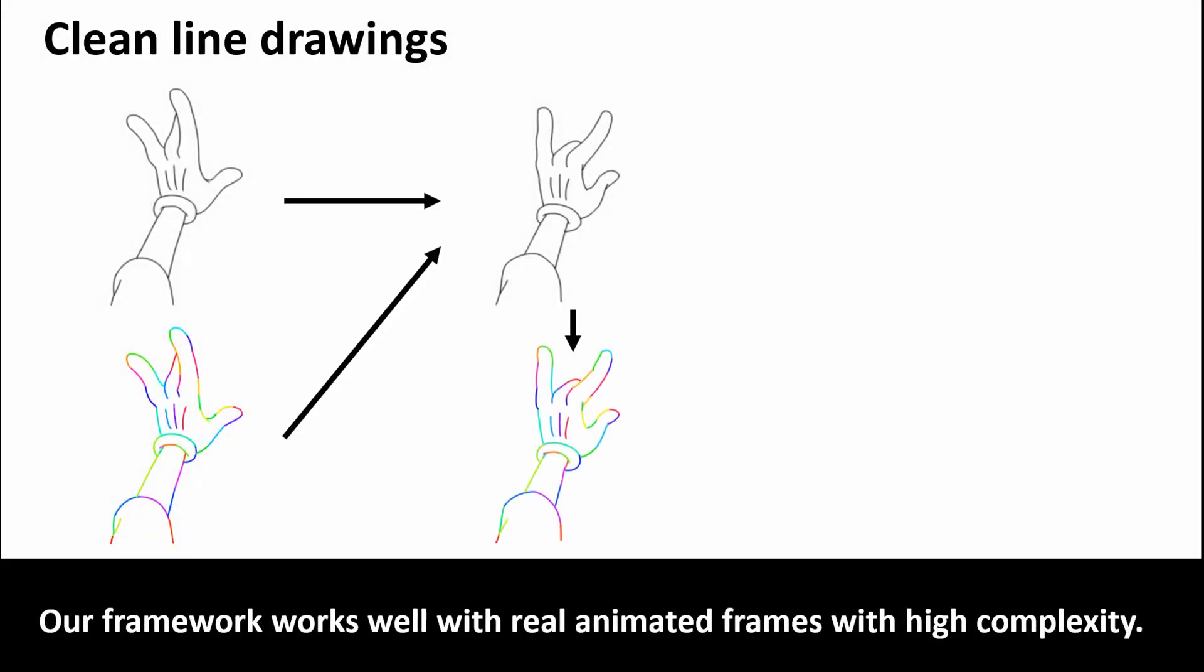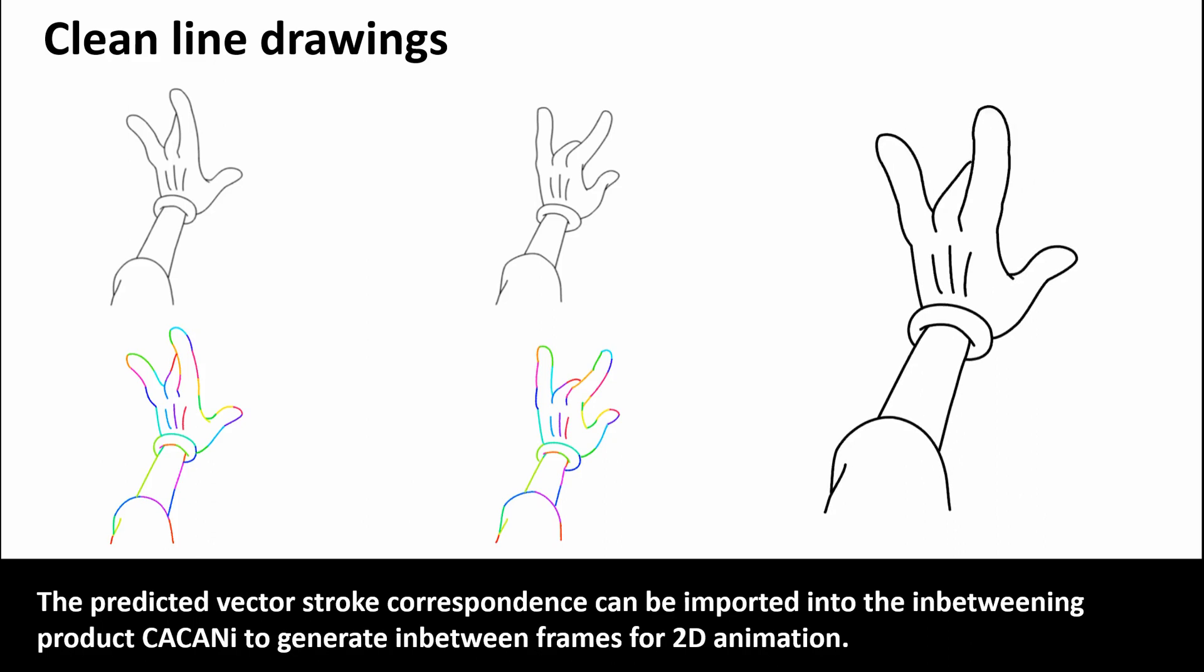Our framework works well with real animated frames with high complexity. The predicted vector stroke correspondence can be imported into the in-betweening product CACANY to generate in-between frames for 2D animation.